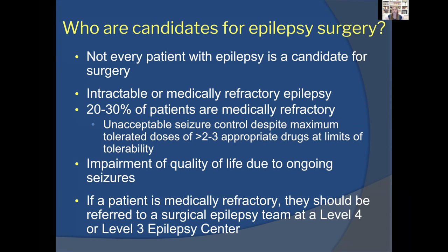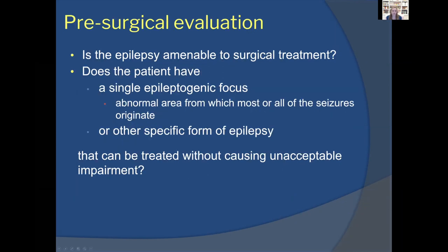We may also consider surgery for people who have an obvious lesion such as a tumor, malformation, or focal problem. For those without a visible issue, surgery may still be considered if they're intractable, have tried multiple medications, are still having seizures, and their quality of life is significantly impaired. Such patients should be referred to a surgical epilepsy center, where a team evaluates whether the patient has a single epileptic focus or another form of epilepsy amenable to treatment without causing unacceptable impairment.